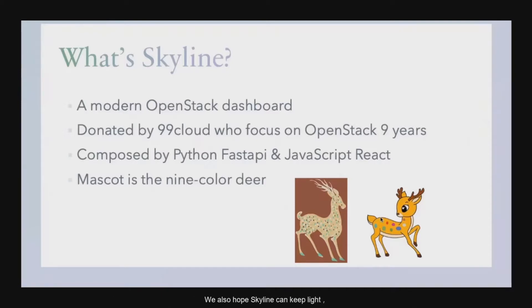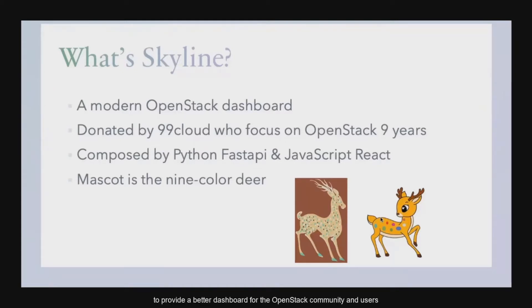We also hope Skyline can keep light, elegant, and powerful as the 9-color-deer, to provide a better dashboard for the OpenStack community and users.